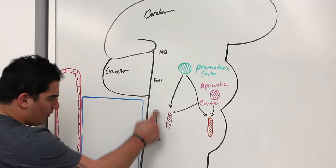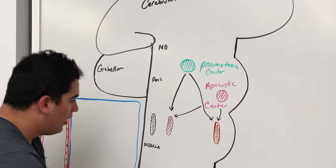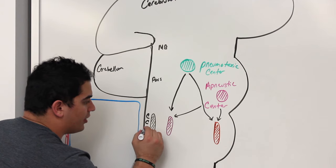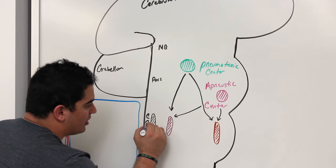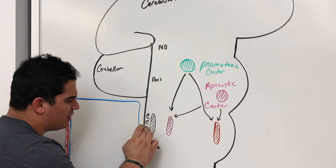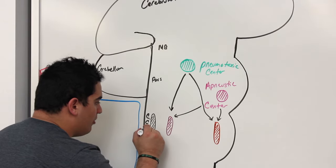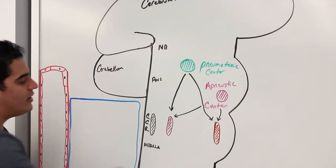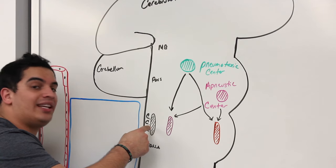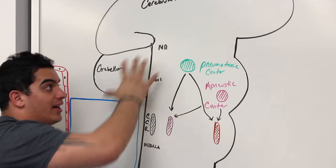These neurons — located within the dorsal and lateral aspect of the medulla — are your central chemoreceptors (CCR). These central chemoreceptors are very interesting; they're actually going to sense any changes in the pH of the cerebrospinal fluid and some of the interstitial fluid inside the central nervous system.